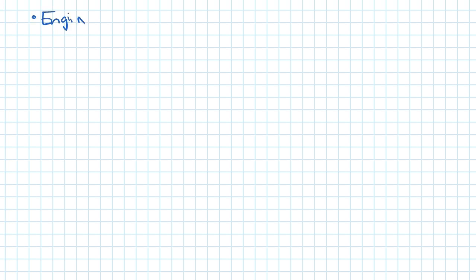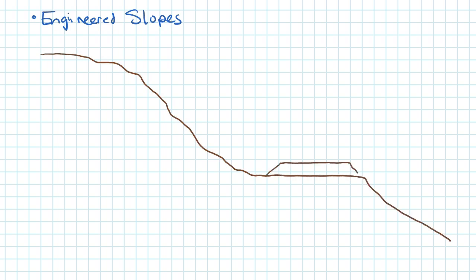This third example is engineered slopes. This example involves a slope near a roadway embankment where our highway is placed. Oftentimes after construction of a roadway in mountainous terrain we end up with some type of slope failure. The red line that I've drawn shows the failure surface where movement is occurring where the mass of soil is moving along that surface.